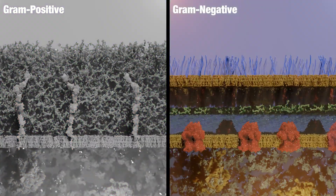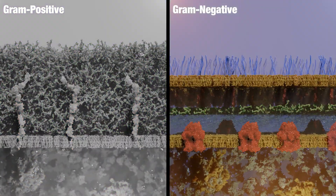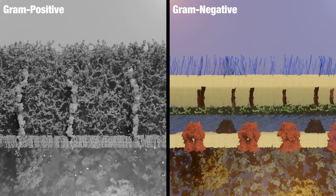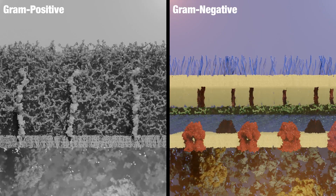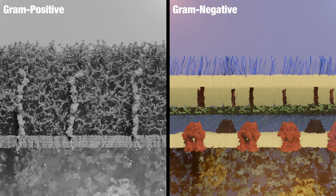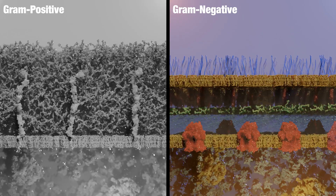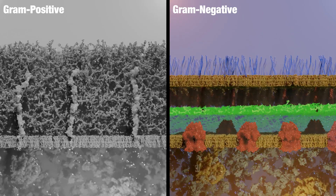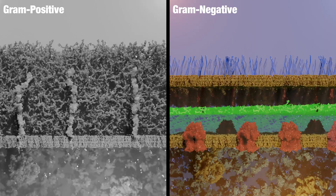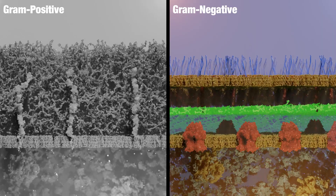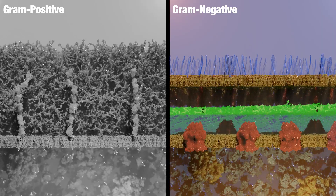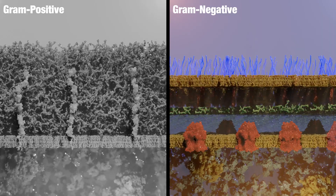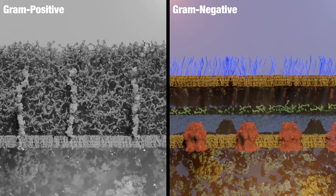The gram-negative wall is more complex, featuring two phospholipid bilayers. These membranes are spaced approximately 40 nanometers apart. In between them lies a peptidoglycan layer that is significantly thinner than the one gram-positive bacteria have. The outer membrane also contains lipopolysaccharides.